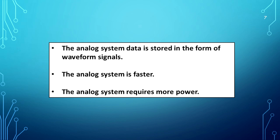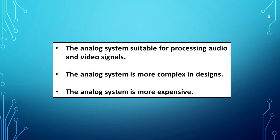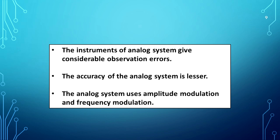The analog system requires more power. The analog system is suitable for processing audio and video signals. The analog system is more complex in design. The analog system is more expensive. The instruments of the analog system give considerable observation errors, and the accuracy of the analog system is lesser.